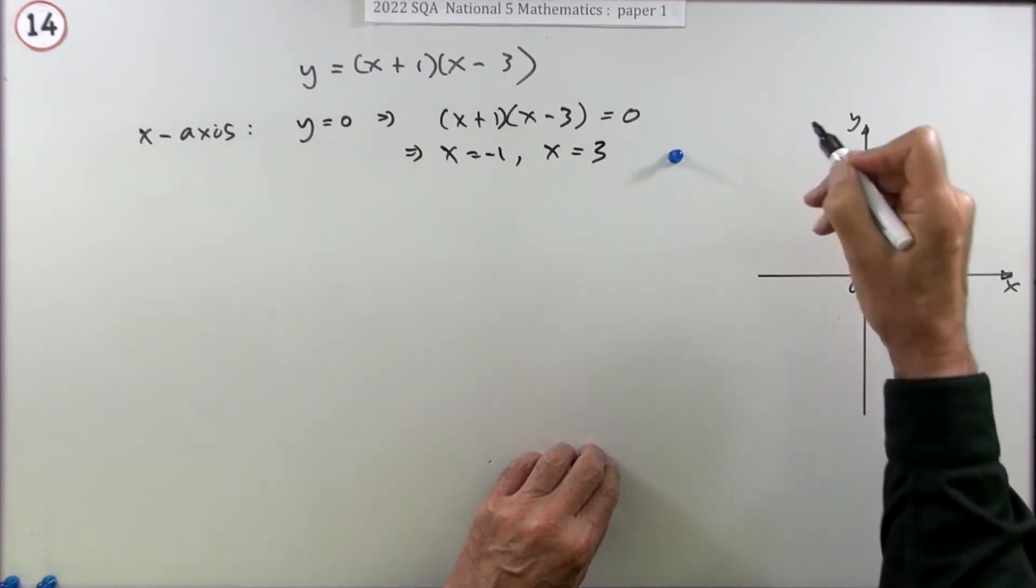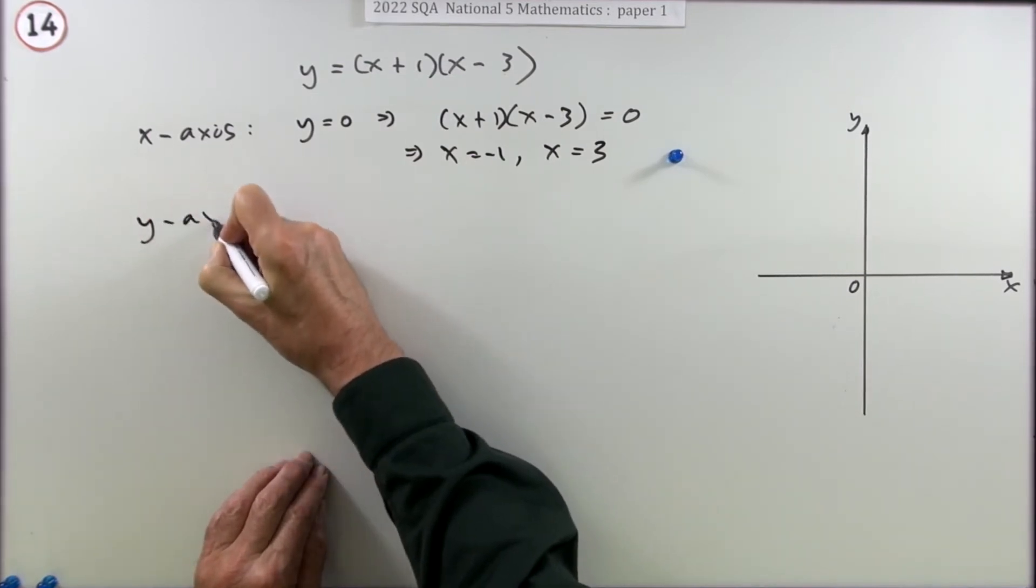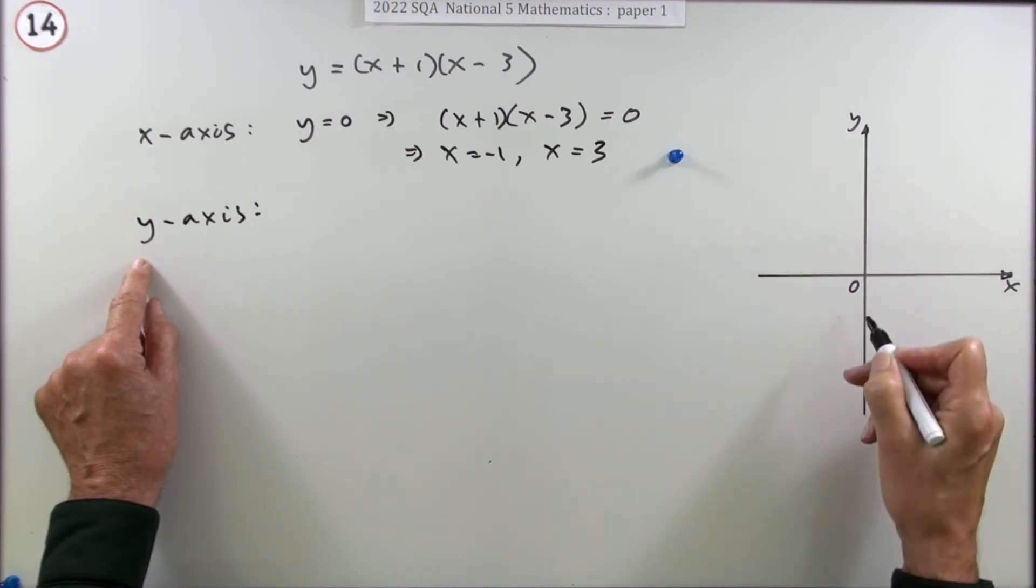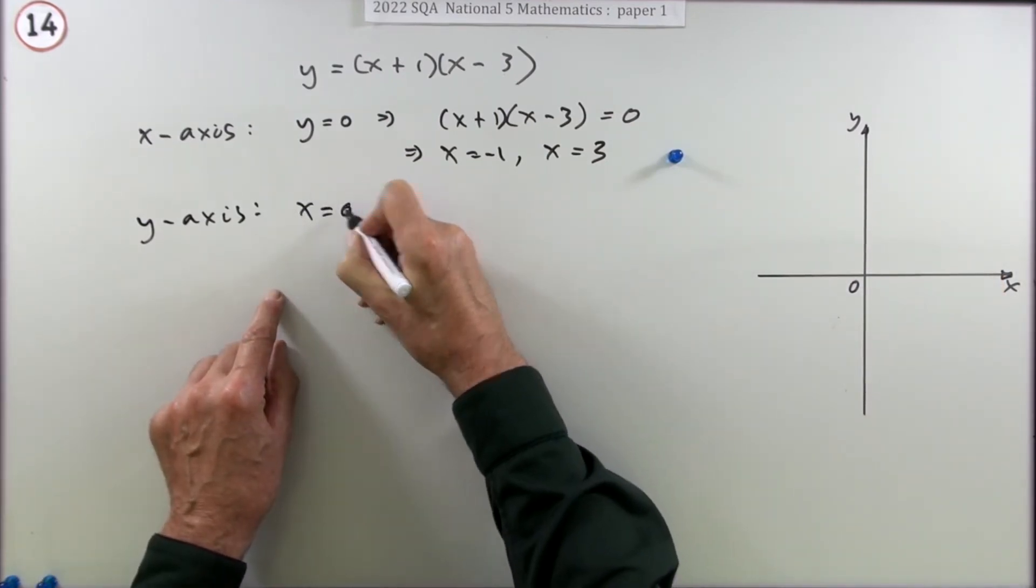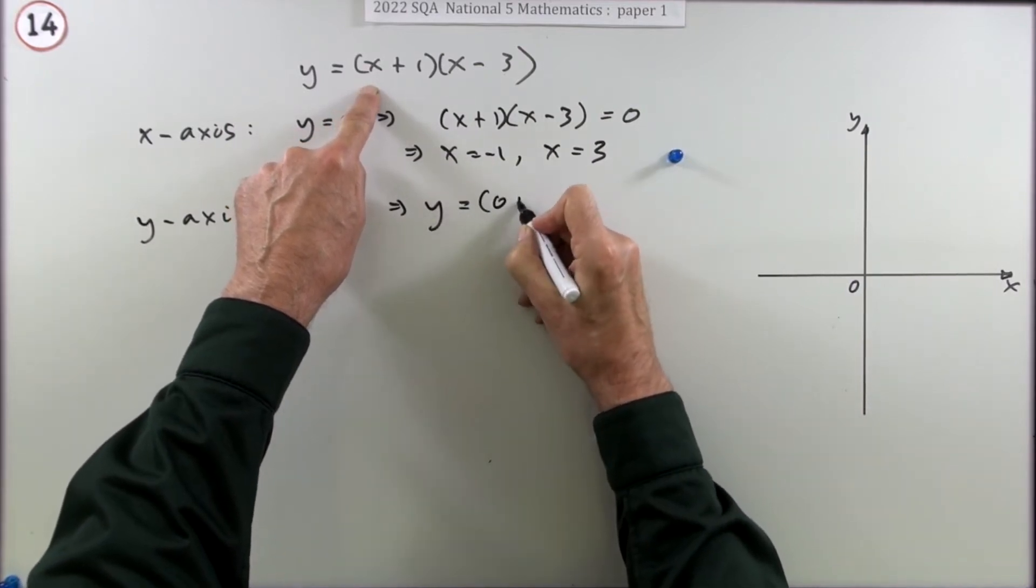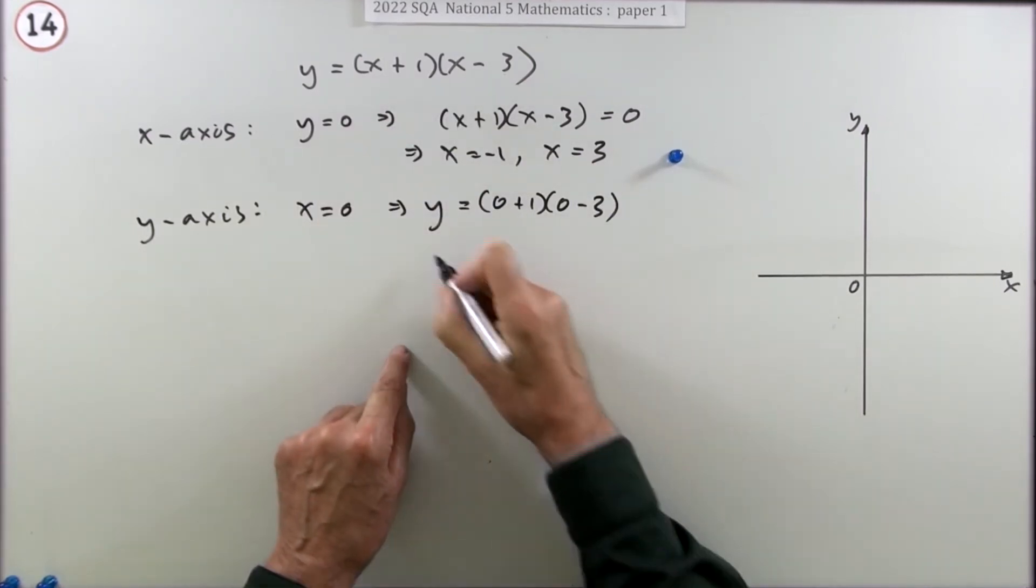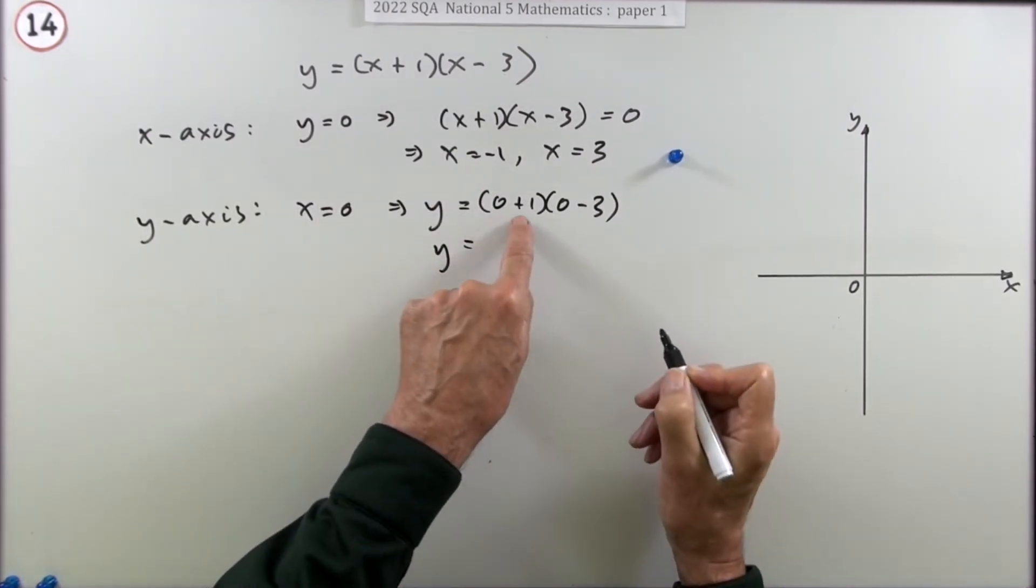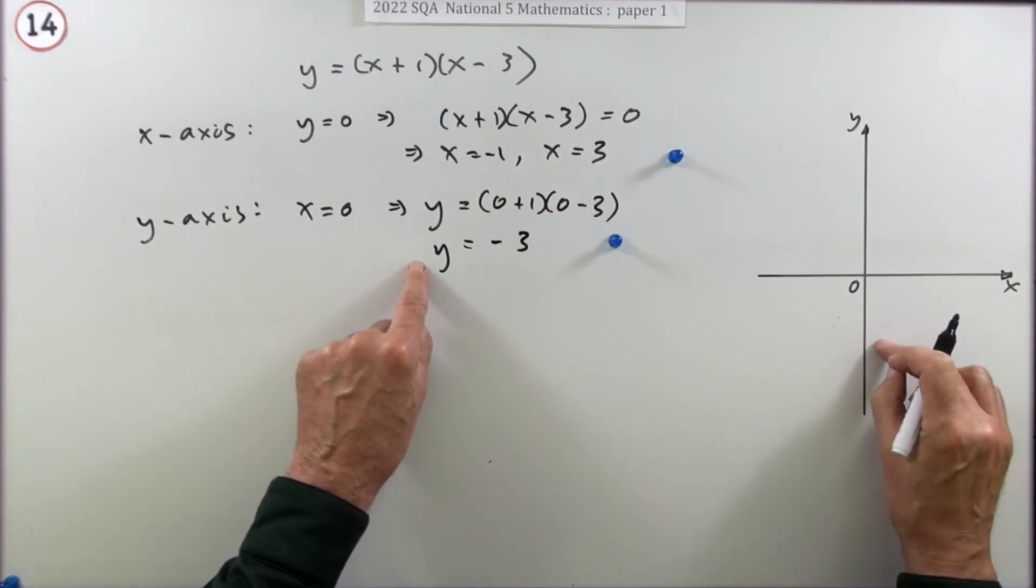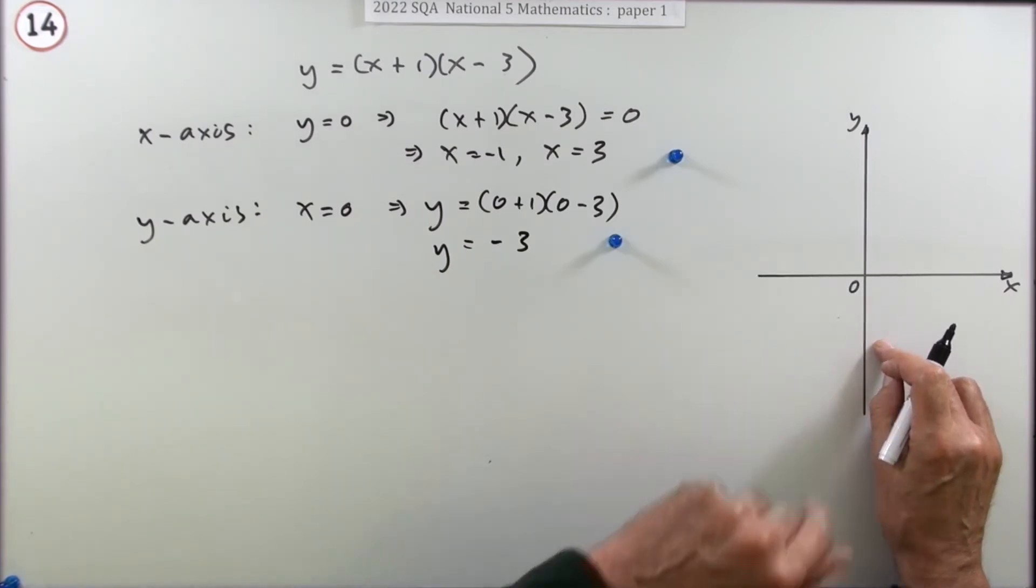Next bit, where does it cut the y-axis? Well to find where it cuts the y-axis, you know what the x-coordinate is - you know the x-coordinate is zero. So you can put that in. So y will be zero plus one times zero minus three, replacing the x's. So y is going to be, that's a 1 times a negative 3 is negative 3. So plotting that, there's the intercept with the y-axis, will be worth a mark but not until you've actually plotted it though.